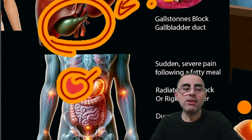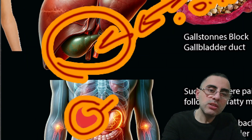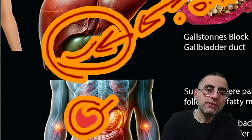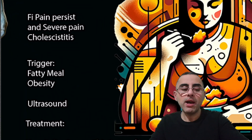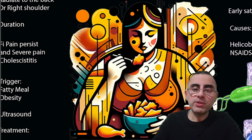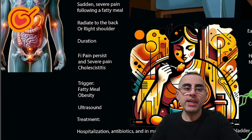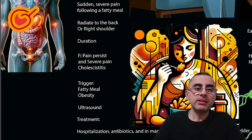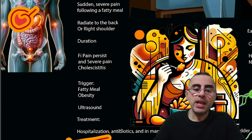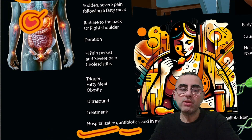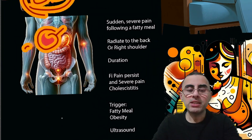If the pain persists, it can cause a more serious condition called cholecystitis, which means inflammation of the gallbladder. This is more serious and is characterized by fever, sometimes jaundice — yellowing of the skin — and pain that does not go away. The pain in the upper abdominal area will not resolve on its own and requires hospitalization in most cases.